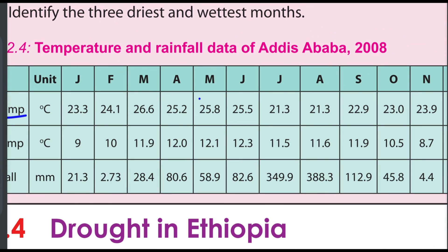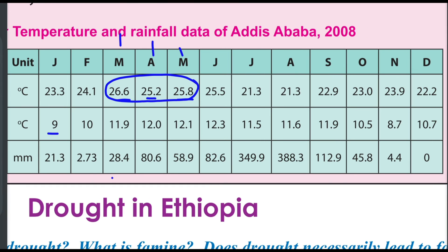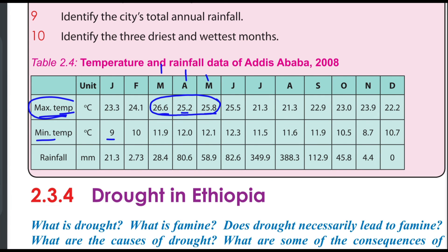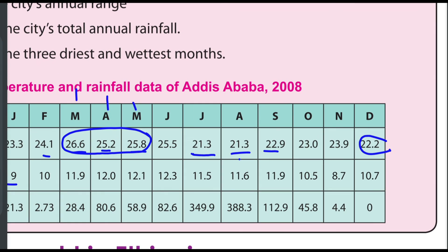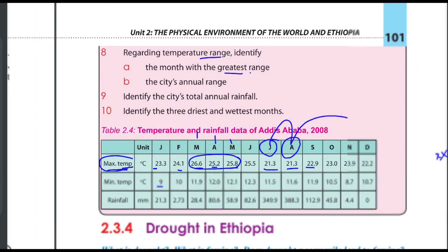The maximum temperature is higher in the months of March, April, and May. Identify the months with the greatest temperature range. Using the maximum and minimum temperature data, determine which months show the greatest difference between maximum and minimum values.